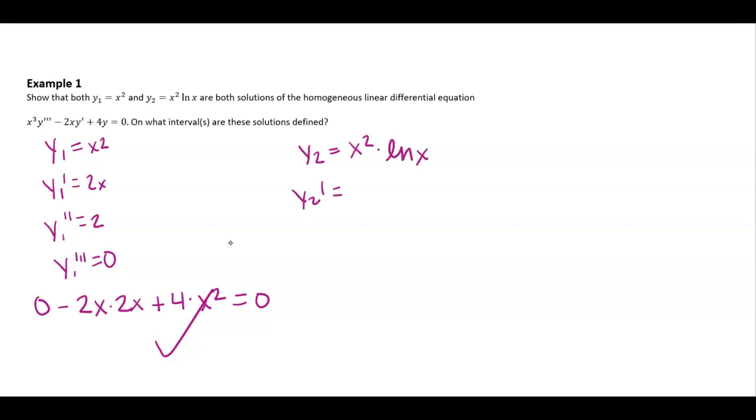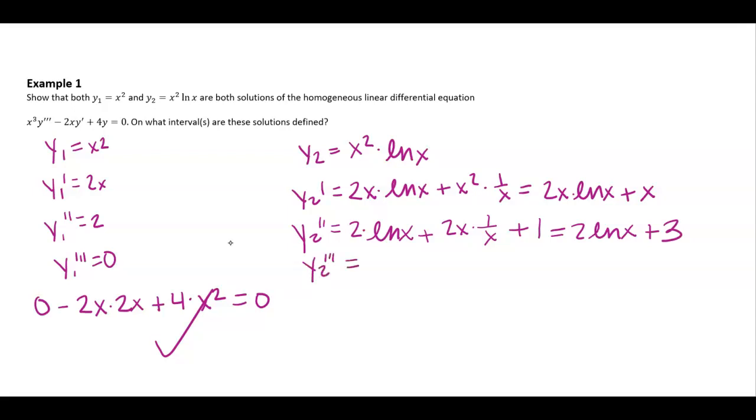Let's take the first derivative. We're going to use some product rule here. And let's clean that up. Let's take the second derivative. And again, let's clean that up. C plus three. And then I'm going to have two over x.